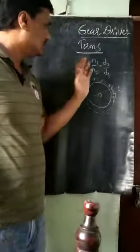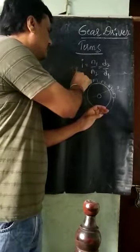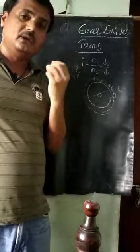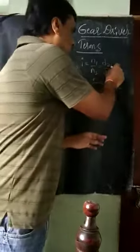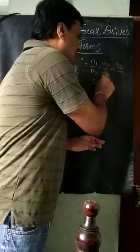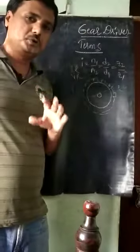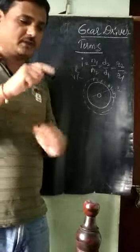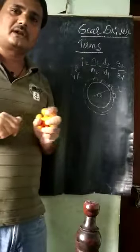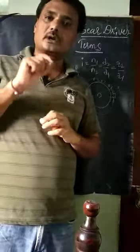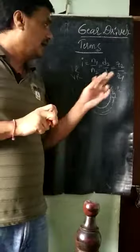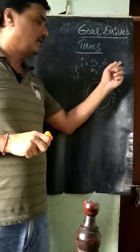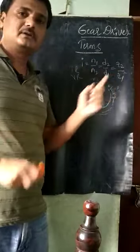The next term is the transmission ratio or velocity ratio. In the case of gears, since there are number of teeth, D is replaced by the number of teeth. In place of D2 we write Z2, and in place of D1 we write Z1. Z1 is the number of teeth on the driver and Z2 is the number of teeth on the follower. Therefore, the transmission ratio is: I = N1/N2 = D2/D1 = Z2/Z1. This is the full transmission ratio for gears in terms of number of teeth.